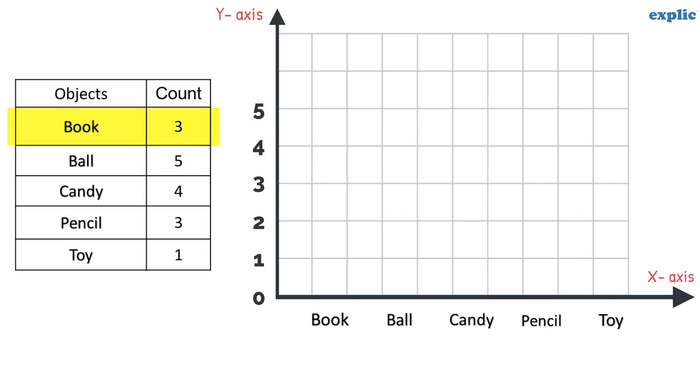Draw the bar to the corresponding number of the labels. For example, for the label 'book,' draw the bar till number 3 of the y-axis. Similarly, the count of the balls is 5, hence draw the bar till number 5. Follow the same process and complete the bar graph.